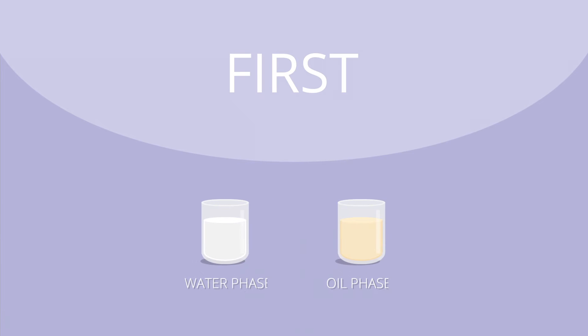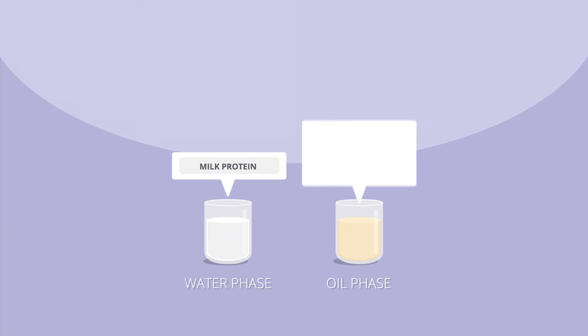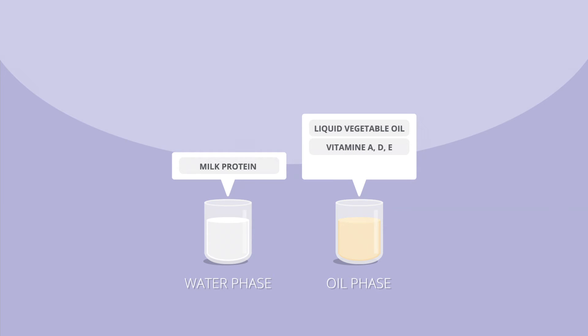First, the water and oil phase are prepared separately. The water phase contains milk protein and the fat phase consists of liquid vegetable oil, vitamin A, D and E, and fat crystals.